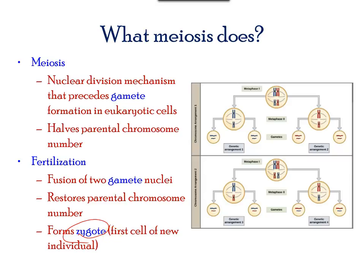Meiosis serves three key functions. First, it reduces the chromosome number. Secondly, it produces variation in species. Thirdly, fusion of sex cells restores the parental chromosome number.